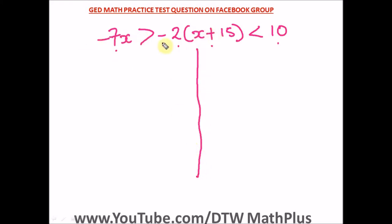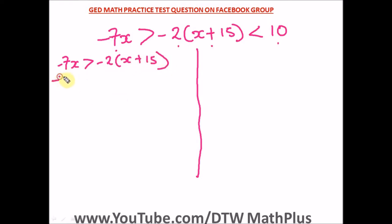Combining the first pair, we have negative 7x greater than negative 2 times bracket x plus 15. Let's open up this bracket: negative 2 times x gives us negative 2x, and negative 2 times positive 15 gives us negative 30. So we have negative 7x greater than negative 2x minus 30.